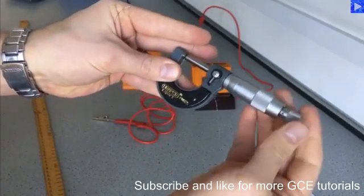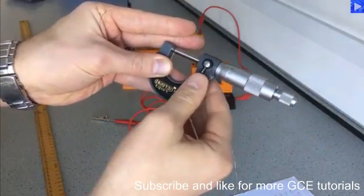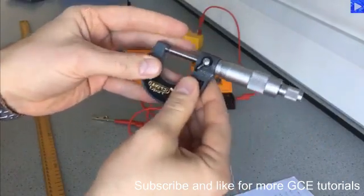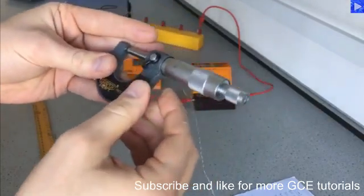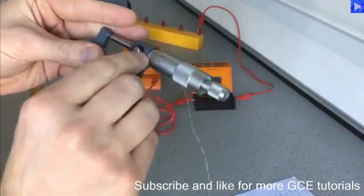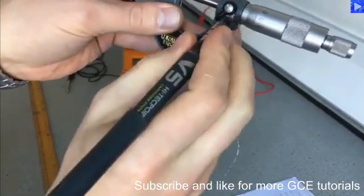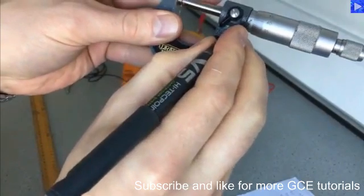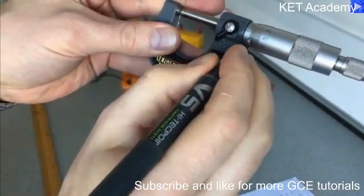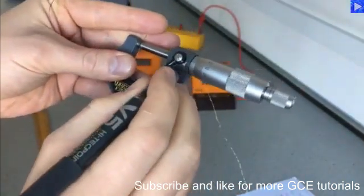Now if I screw this up until the ratchet clicks a couple of times, I can use the locking lever now to stop the thimble rotating anymore. And now if I have a look on the scale here, I'm less than one millimeter and less than a half millimeter. So I'm just reading off the thimble to find out what the diameter of the wire is directly.